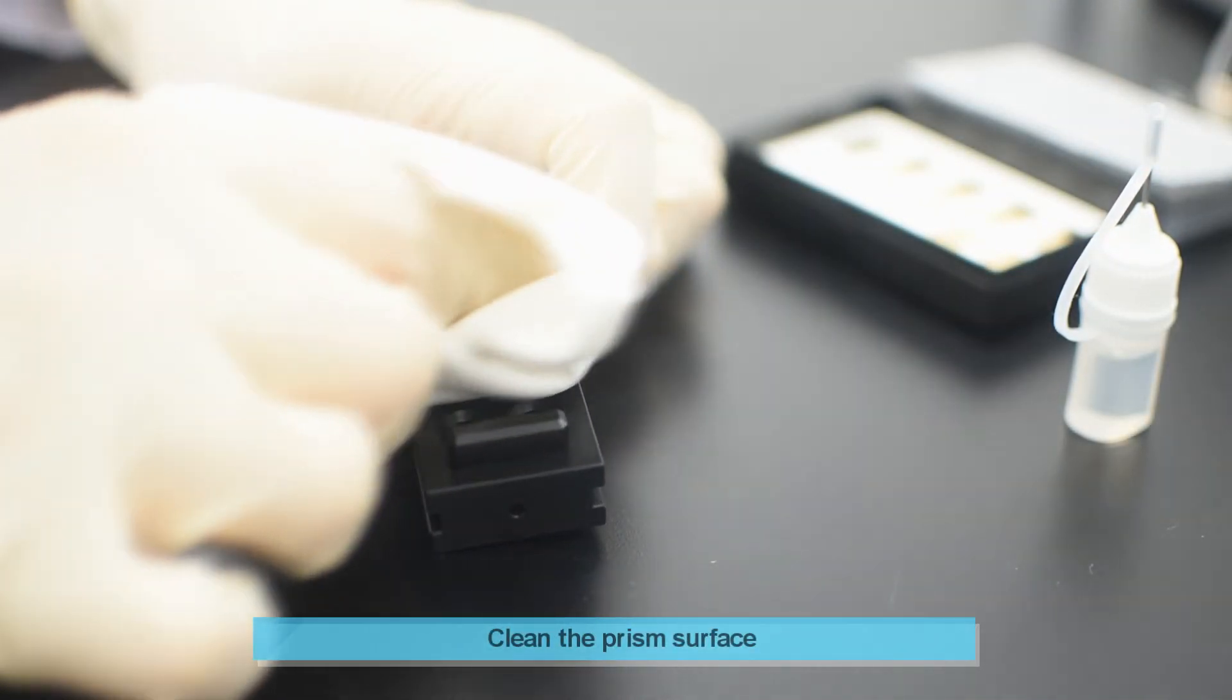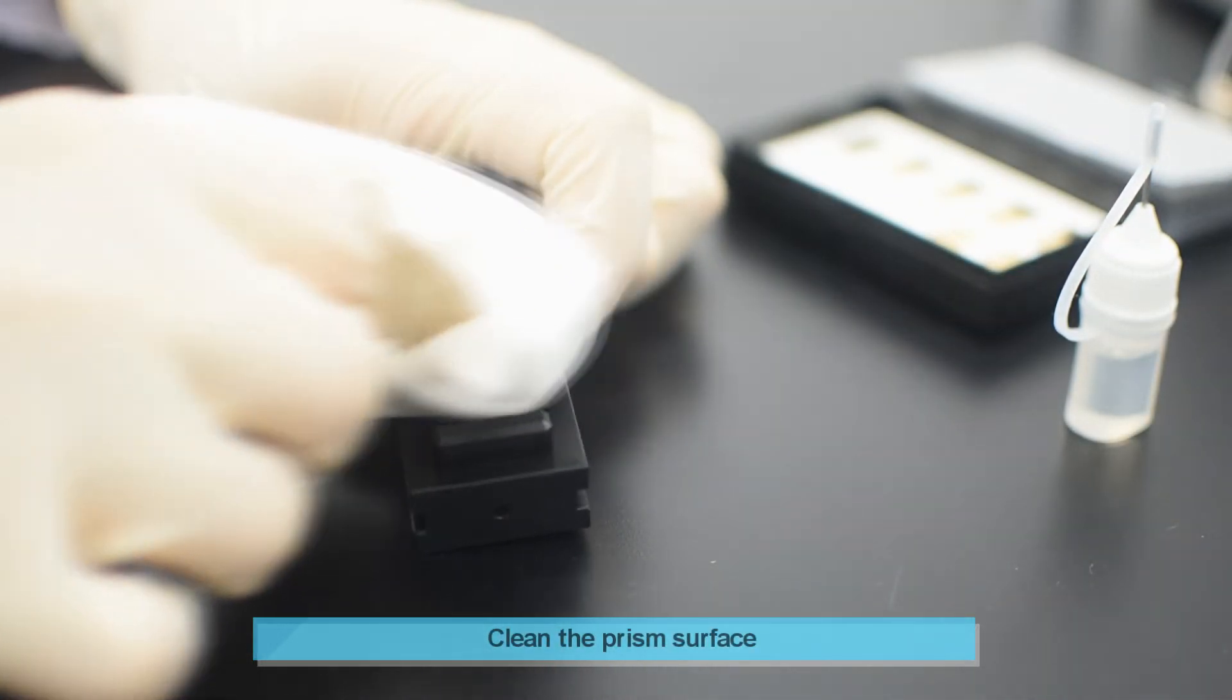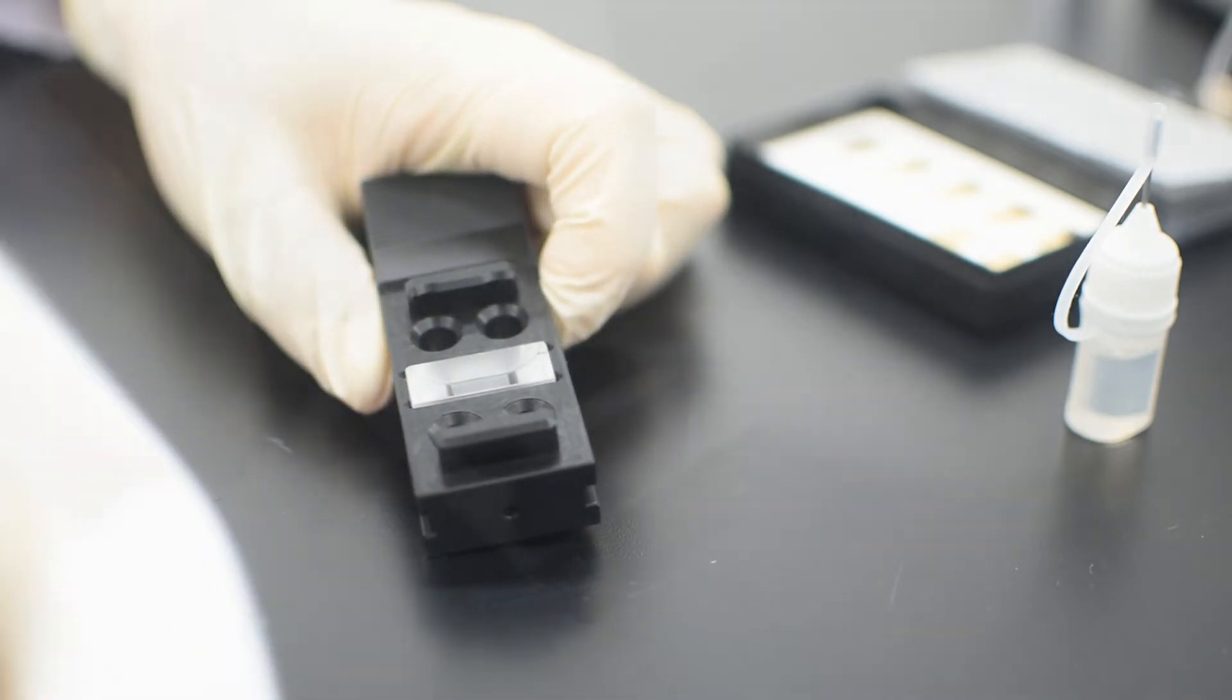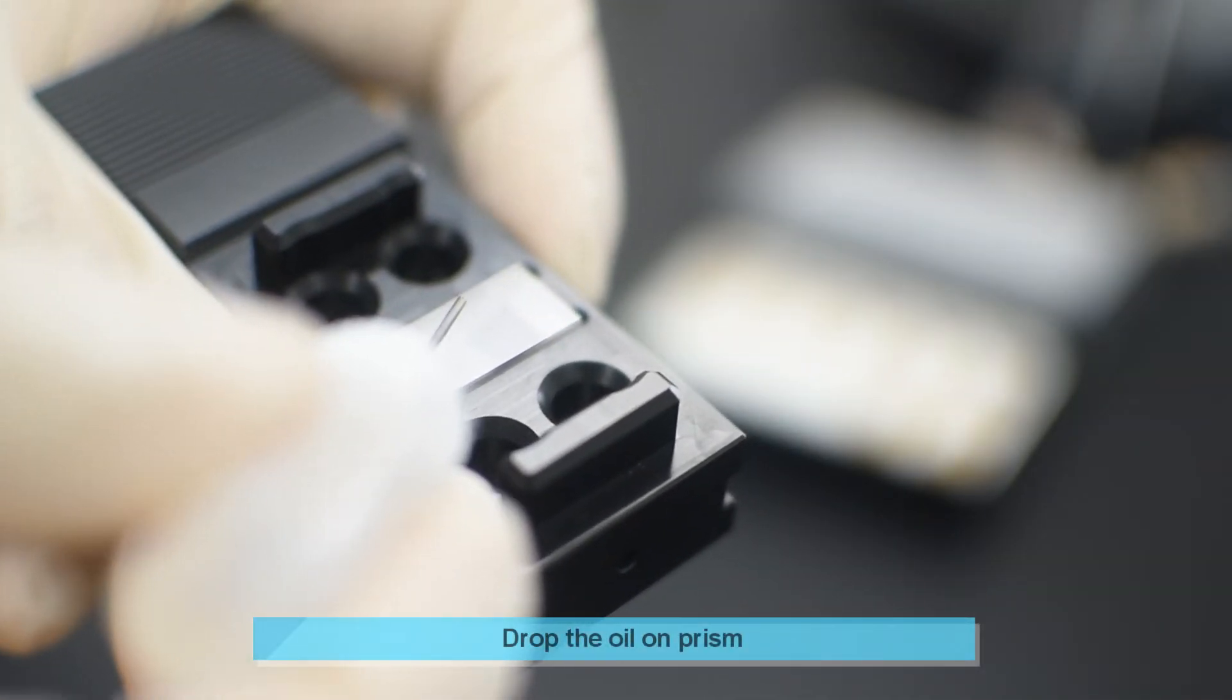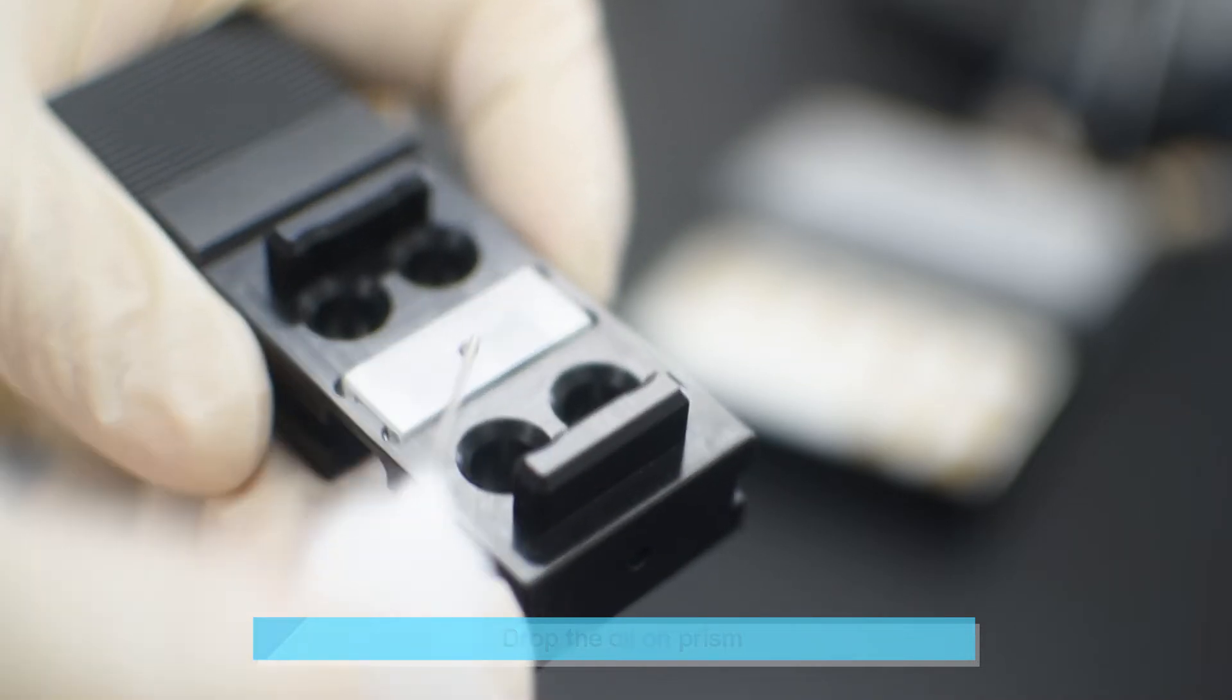To set up the SPR sensor chip, clean the prism surface. Drop a small amount of mineral oil, around 1 to 2 µL, on the prism.